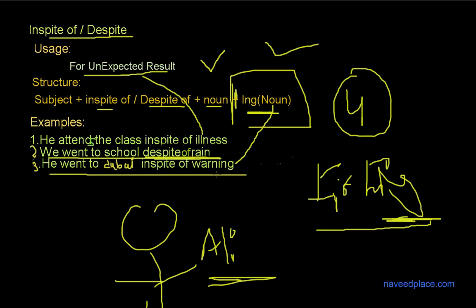In the example 'He went to Dubai in spite of warning,' 'warning' is the gerund. In 'He attends the class in spite of illness,' 'illness' is a noun. In 'We went to school in spite of rain,' 'rain' is also a noun. So in two examples we use a noun, and in the last example we use a gerund. We use 'in spite of' or 'despite' to show an unexpected result.